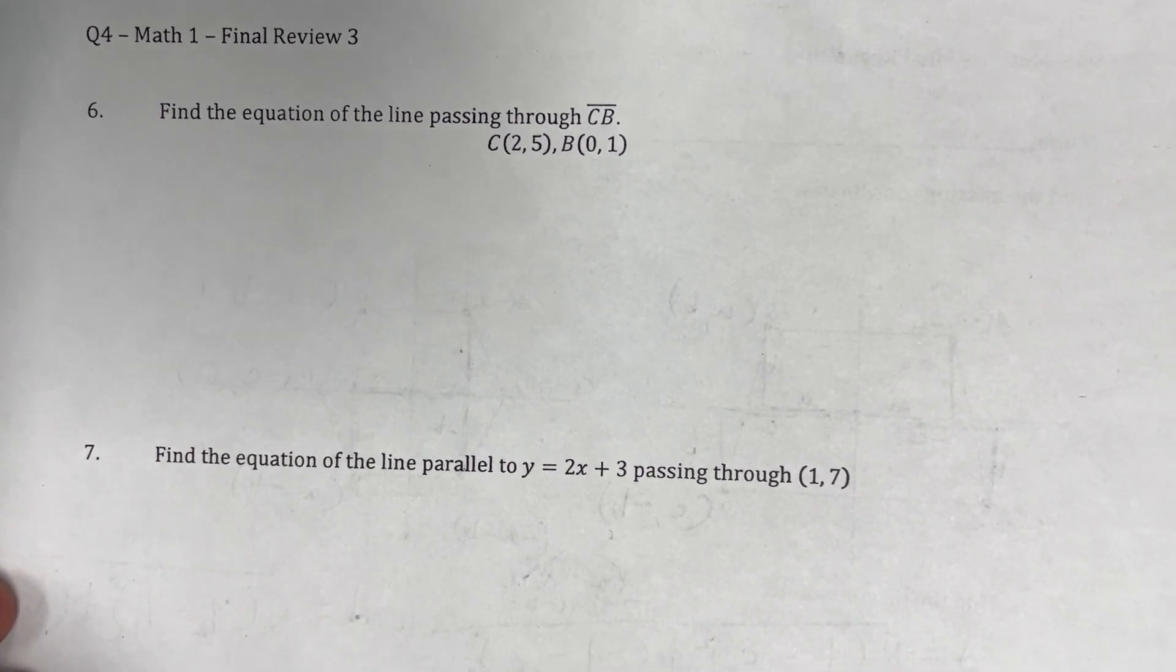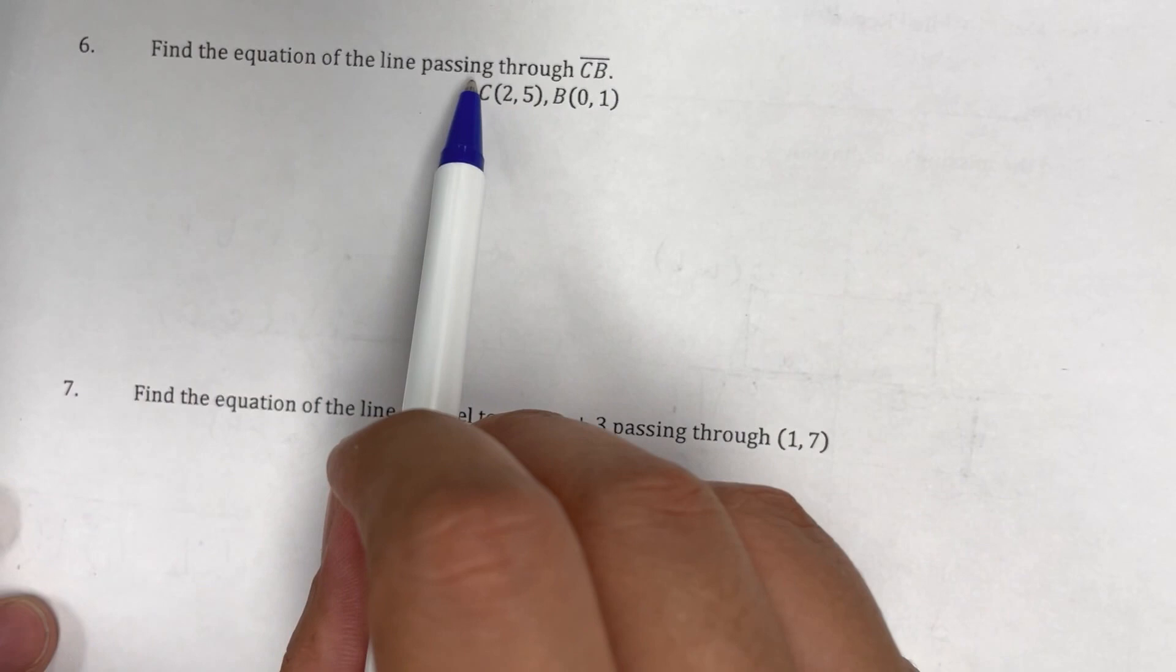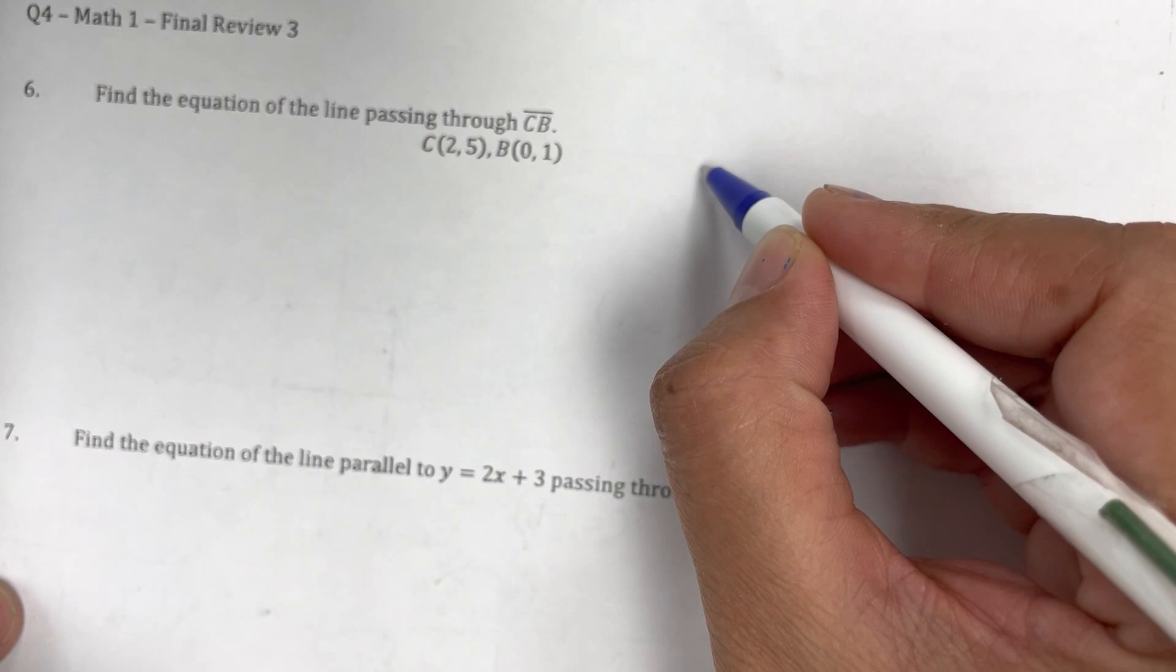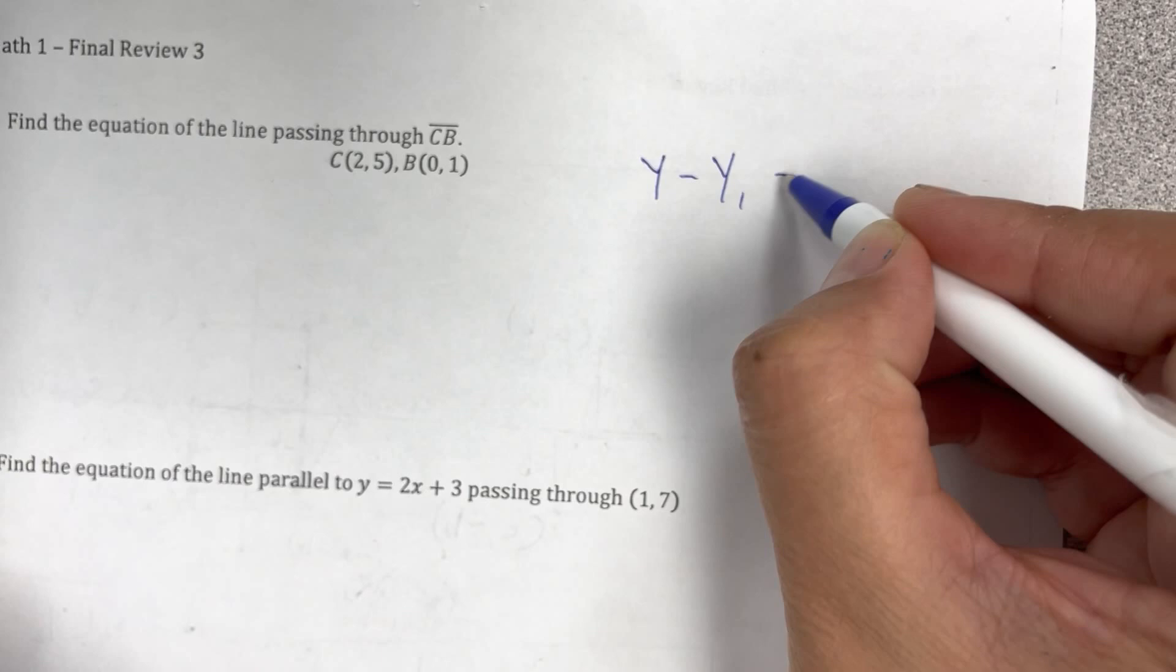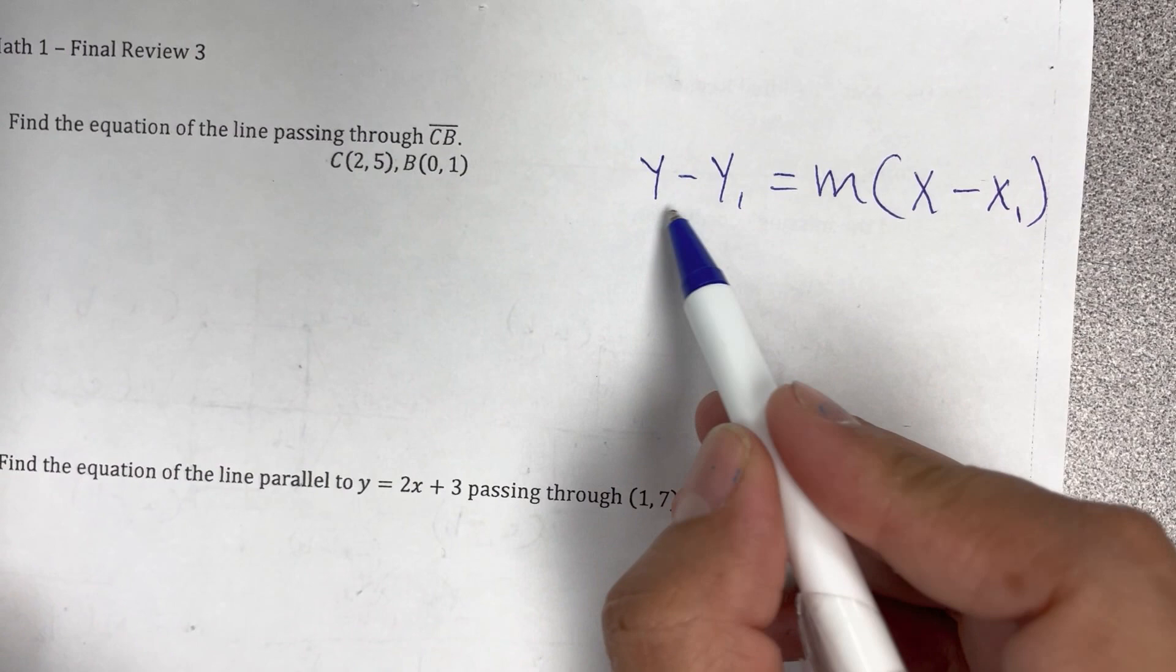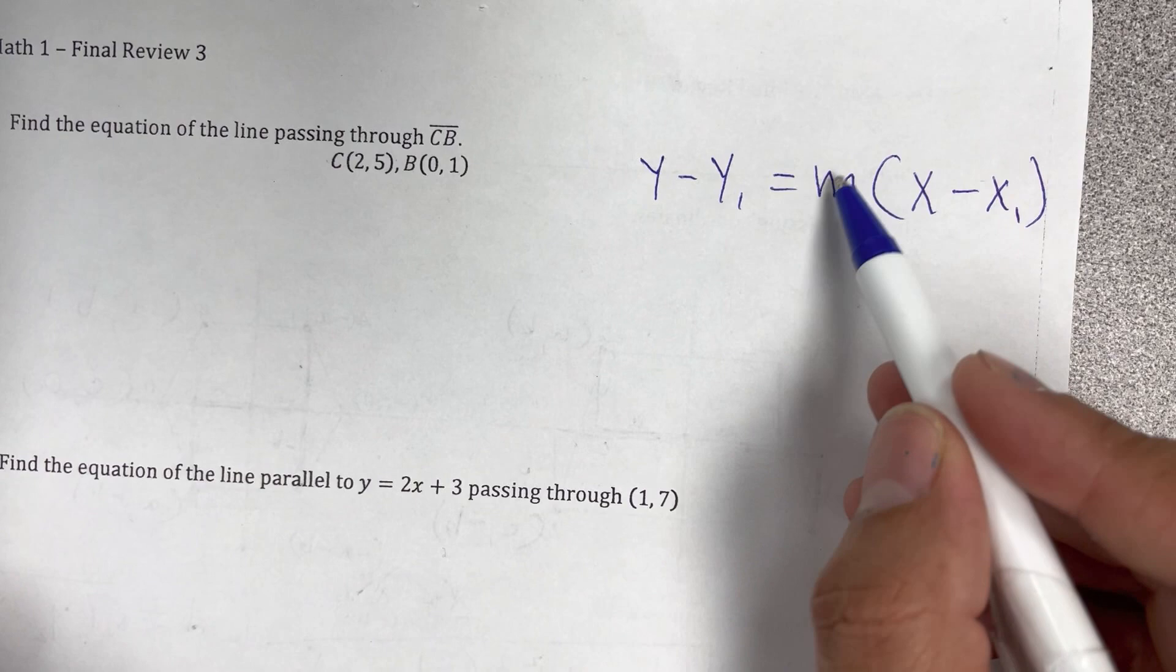This is page 2 of the practice test and it's find the equation of the line passing through CB. So to be able to find the equation with the point slope formula which is y minus y1 equals m times x minus x1. So that's the general formula.